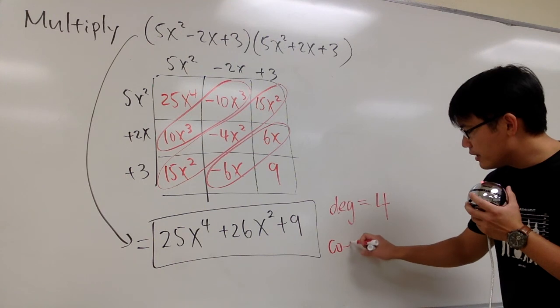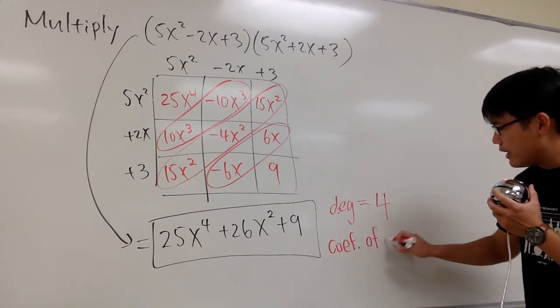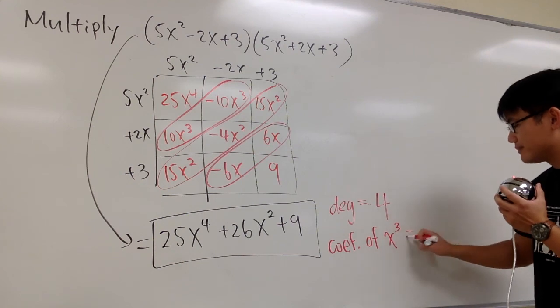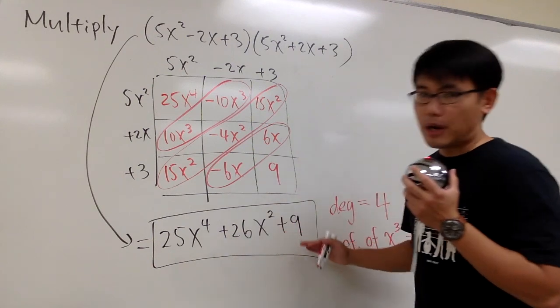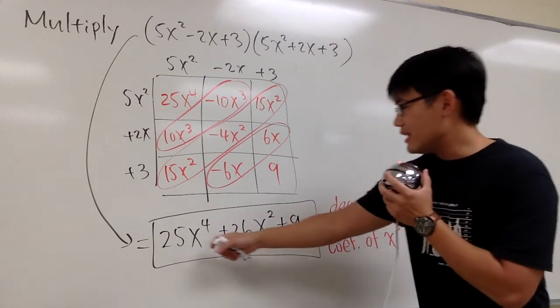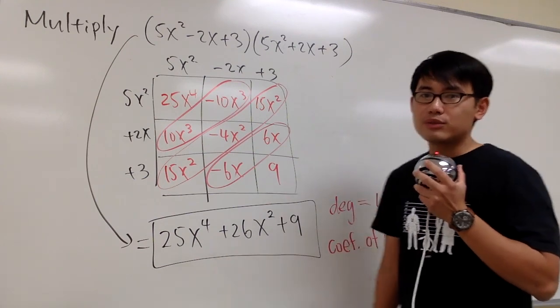How about what's the coefficient? And let me ask you guys a tricky question. What's the coefficient of x to the third power? Well, let's look at the result. Do we have x to the third power? We don't. You see that this is x to the fourth power, this is x to the second power, but we don't have x to the third power.